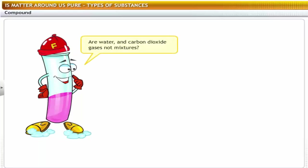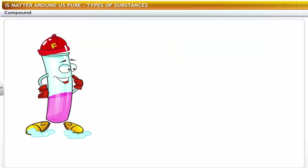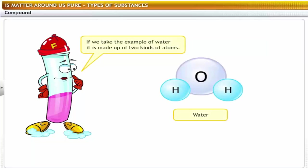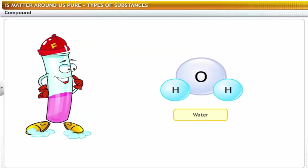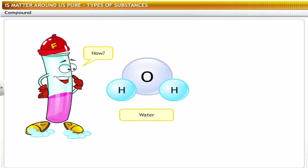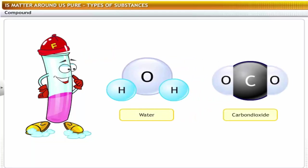Are water and carbon dioxide gases not mixtures? No. If we take the example of water, it is made up of two kinds of atoms — oxygen and hydrogen atoms. But still, it is a pure substance. Water and carbon dioxide are examples of compounds.